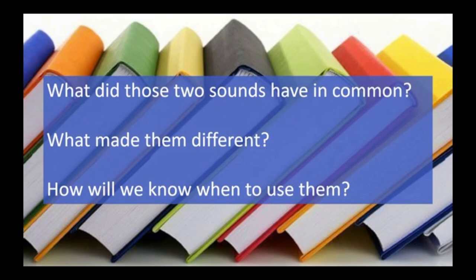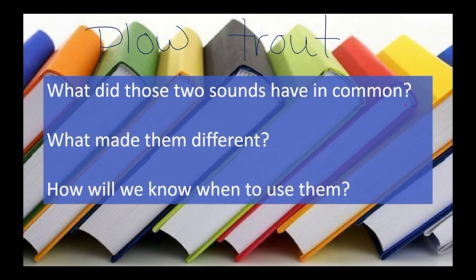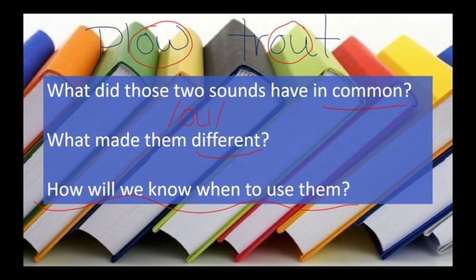As we look at the two words — plow and trout — let's think together about what do these sounds have in common, what makes them different, and how will we know when to use them. Notice that both of them have the double vowel sound, and both make the sound OW. What makes them different is that one is spelled with a W and the other is spelled with a U.